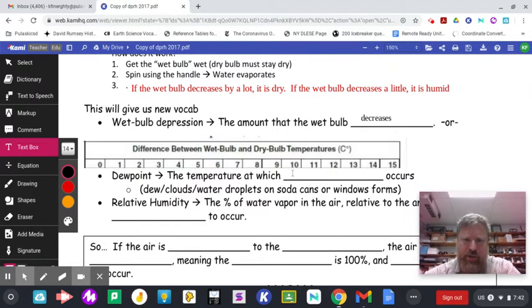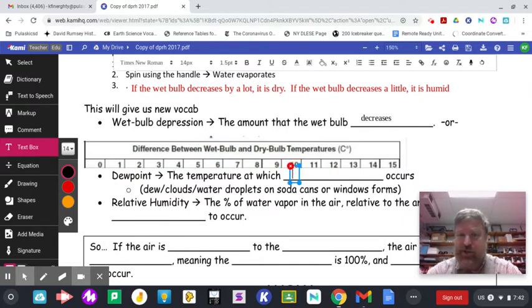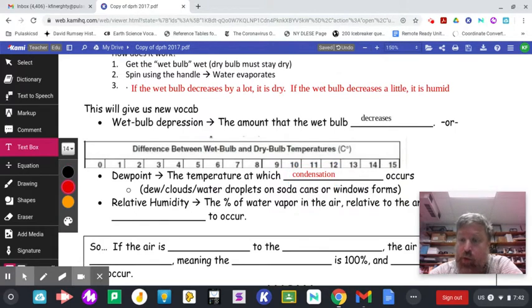All right. So what the heck is dew point? It's the temperature. It's the temperature you got to get to. Temperature at which condensation occurs. Condensation. What condensation is, and you've all experienced this, is when I think the most common one is like in the summertime, when you get water droplets on the outside of soda cans, you'll see it on windows this time of year. If it's more humid inside and the window's cold, you'll get condensation on the inside of your window at home.